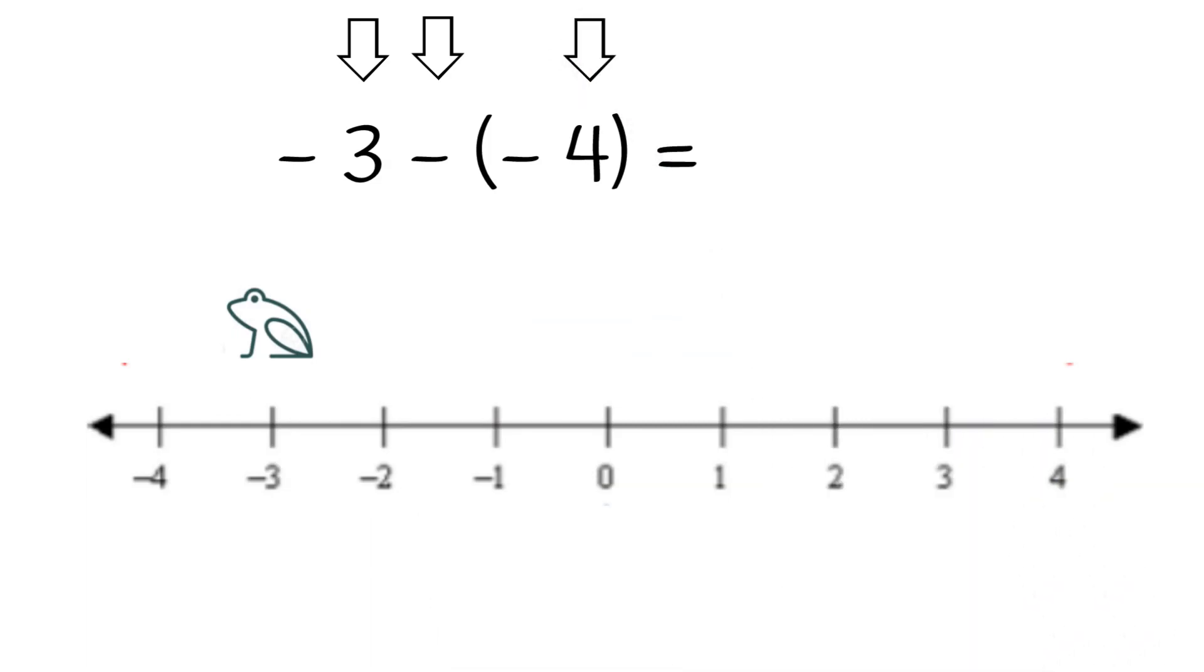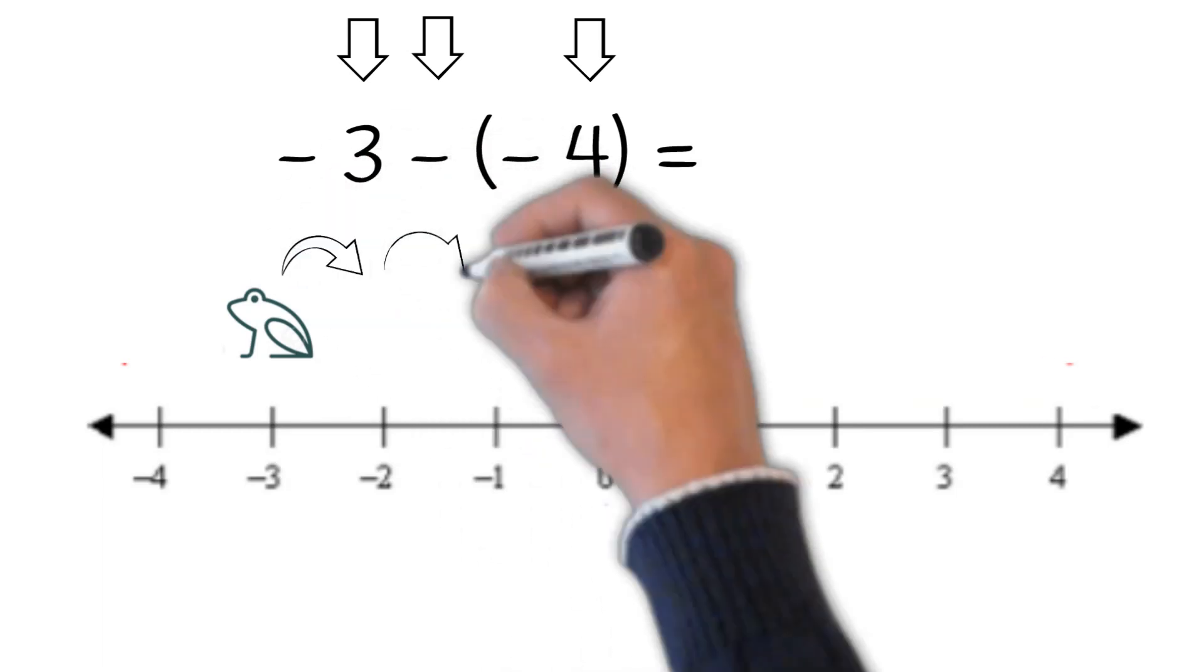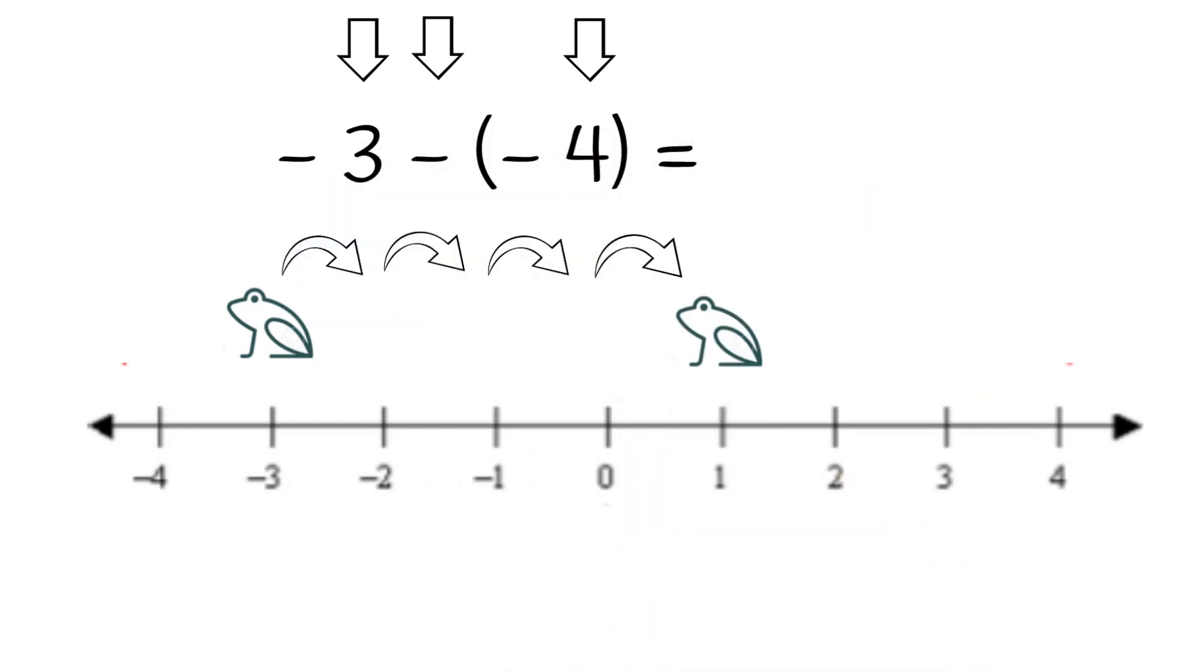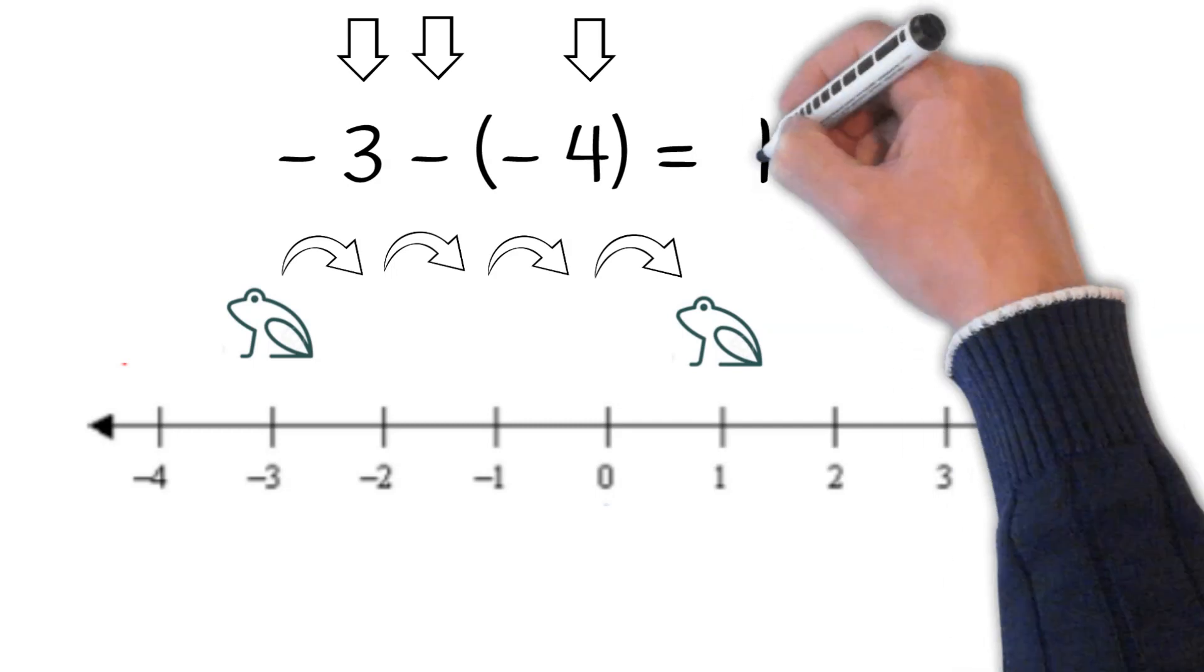Our second number is a negative 4, therefore our frog will move backwards four spaces. Our frog landed at positive 1 and that's our answer. Negative 3 minus negative 4 equals 1.